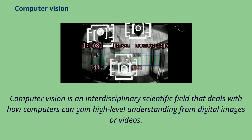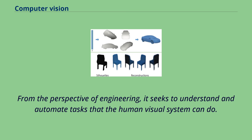Computer vision is an interdisciplinary scientific field that deals with how computers can gain high-level understanding from digital images or videos. From the perspective of engineering, it seeks to understand and automate tasks that the human visual system can do.